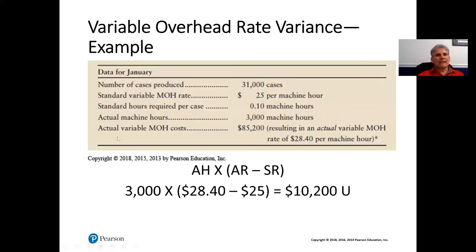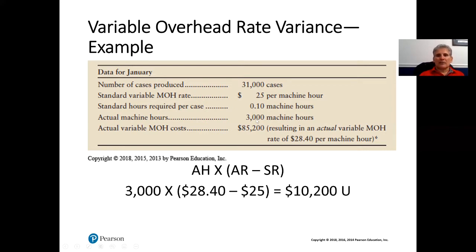Here's the data we're looking at. The number of cases produced is 31,000. The standard variable manufacturing overhead rate is $25 per hour. The standard hours required per case is 0.1 machine hours. The actual machine hours were 3,000 machine hours, and the actual variable manufacturing overhead costs are $85,200. This gives us an actual variable manufacturing overhead rate of $28.40 per machine hour — that's $85,200 divided by 3,000.